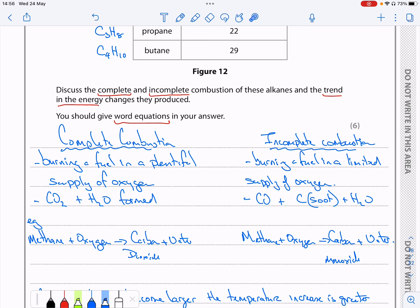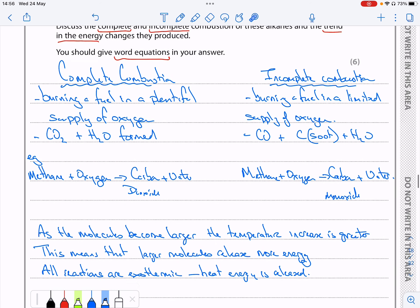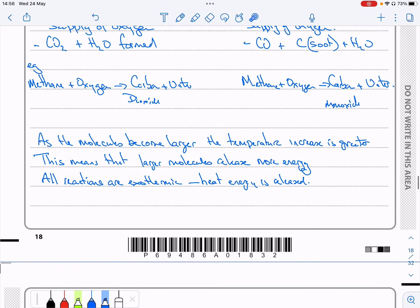And use the same alkane, so methane plus oxygen could be carbon monoxide and water. In terms of the data, we can see that as the molecules become larger the temperature rises greater.